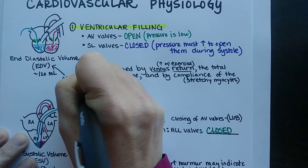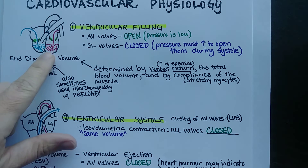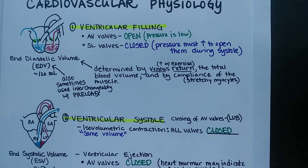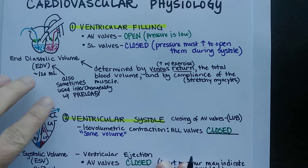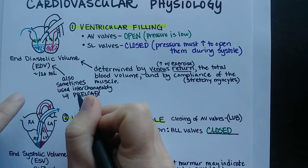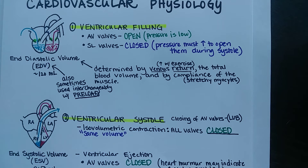Technically, preload is the amount of pressure pushing on the ventricle walls during ventricular filling or at the end of it. However, in a clinical setting, end diastolic volume is often used as an estimate of preload.